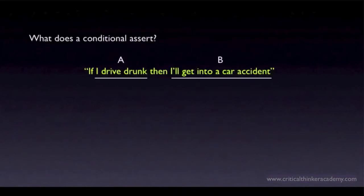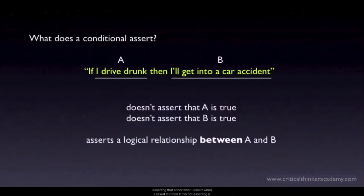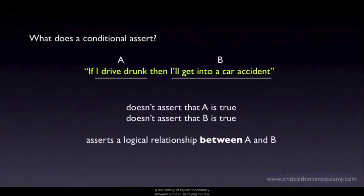It's pretty easy to understand what conjunctions and disjunctions assert. It's not quite as easy to see exactly what you're asserting when you assert a conditional. Here's a conditional: if I drive drunk, then I'll get into a car accident. If I assert that this is true, am I asserting that I'm driving drunk? No. Am I asserting that I'm going to get into a car accident? No. When I assert 'if A then B,' I'm not asserting A and I'm not asserting B. What I'm asserting is a conditional relationship — a relationship of logical dependency between A and B. I'm saying that if A were true, then B would also be true, but I can say that without asserting that either A or B is in fact true.